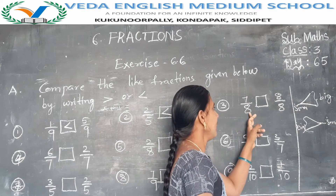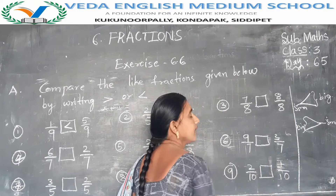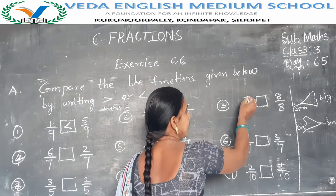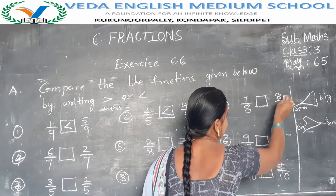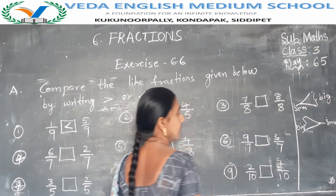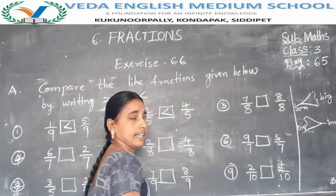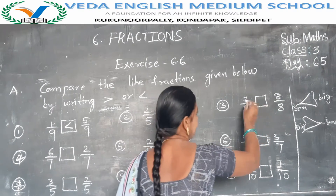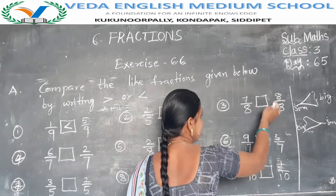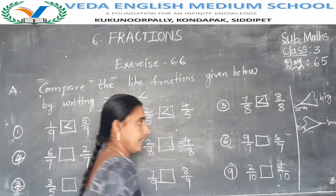Third one: 7 by 8 and 8 by 8. In this fraction also, denominators are the same but numerator changes. In the first fraction the numerator is 7; in the second fraction the numerator is 8. Compare now — 7 and 8. Which one is bigger? 8 is bigger than 7. So 7 is smaller than 8. In this box also we use less than.